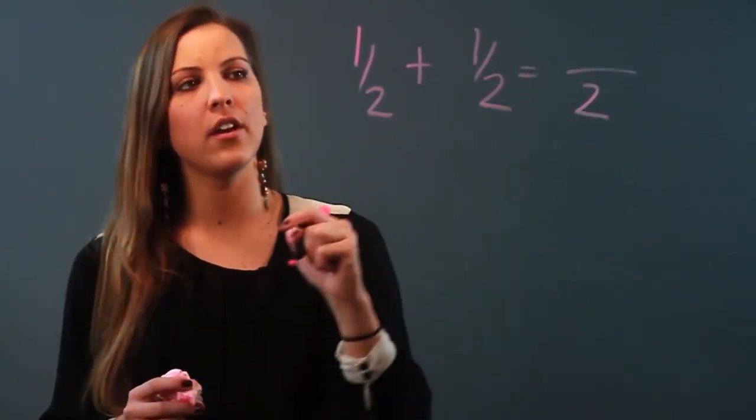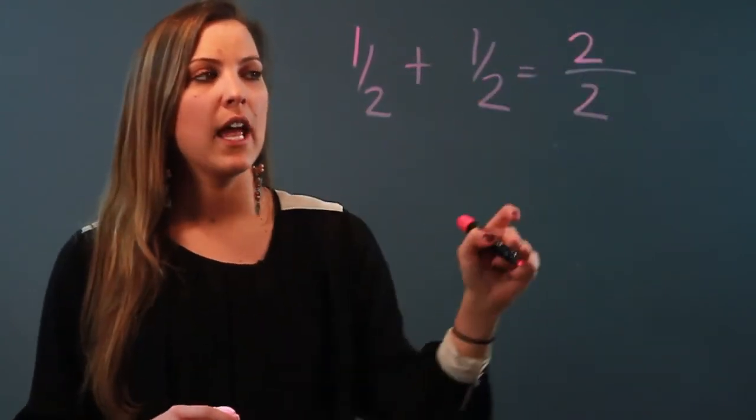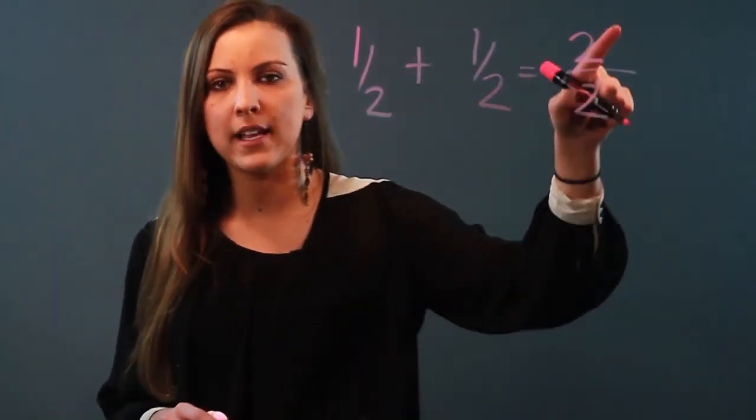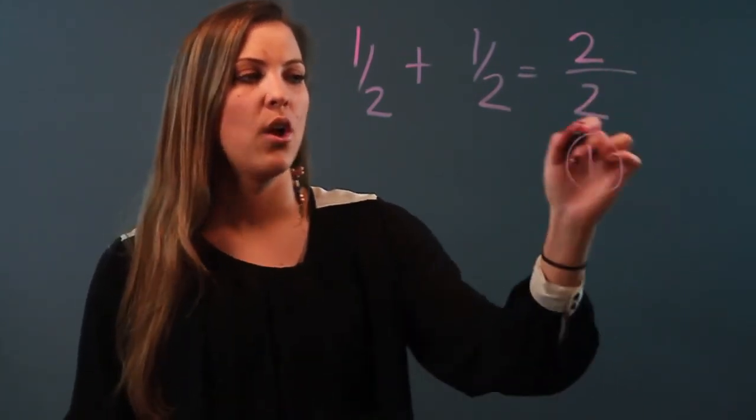So now I've got 1 plus 1, which is 2, and my answer is 2 over 2, but I can simplify that and make that an integer because 2 divided by 2 is just 1.